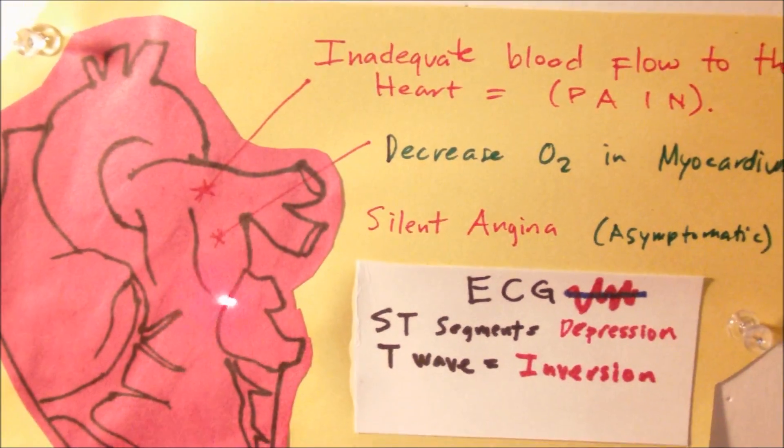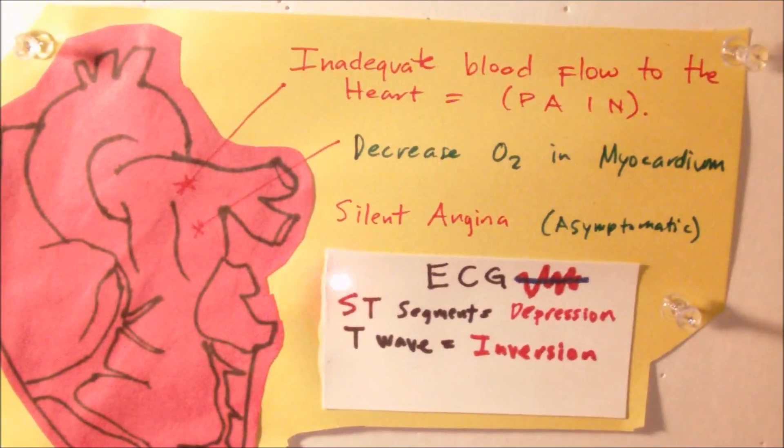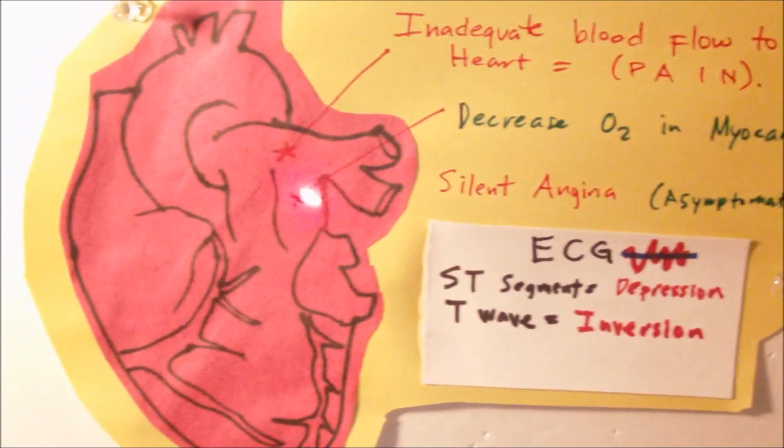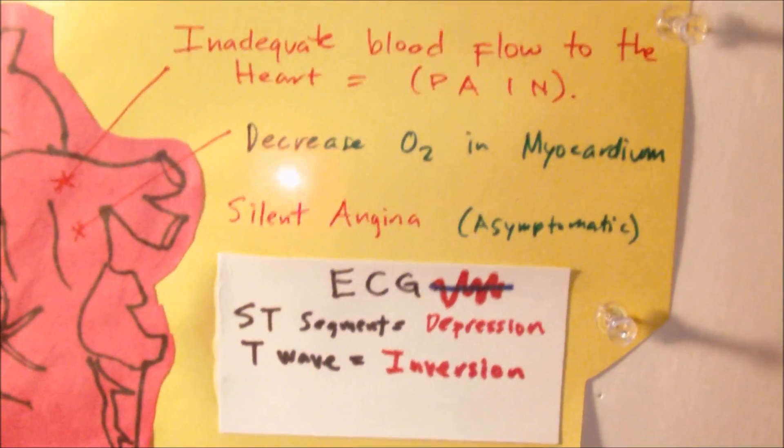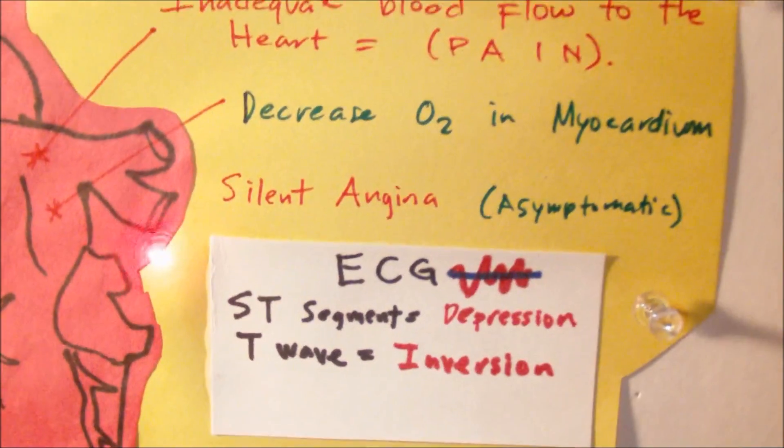Now for the NCLEX, it is important to know that with angina it is usually described as a squeezing, heavy discomfort or pressure within the chest. Obviously chest pain is the number one symptom, but it can also be substernal pain that can radiate to the neck, the jaw, and the back.